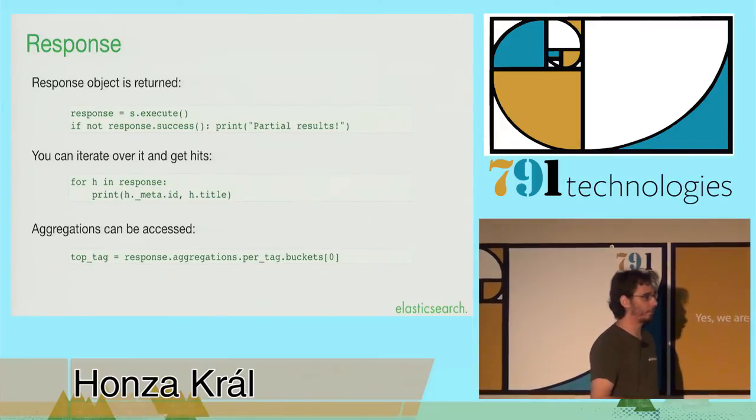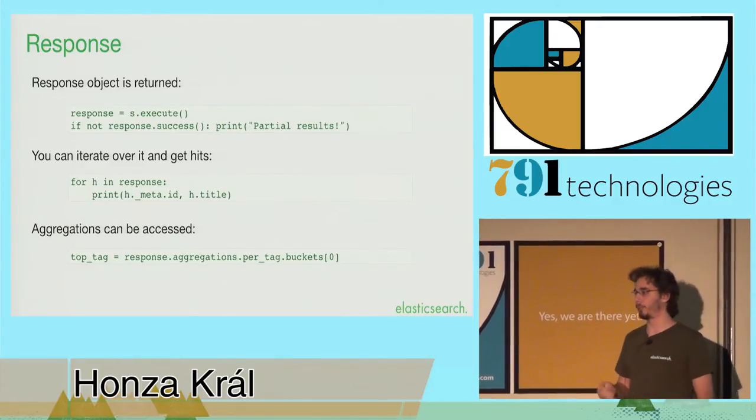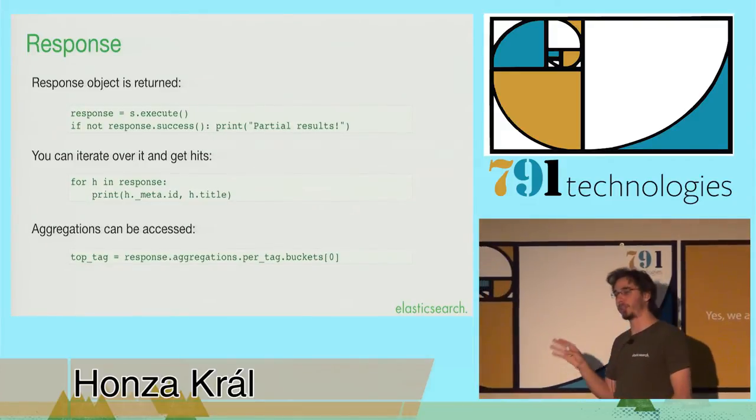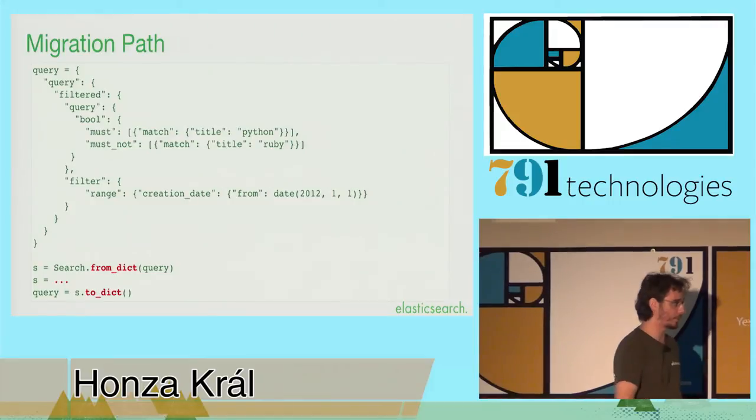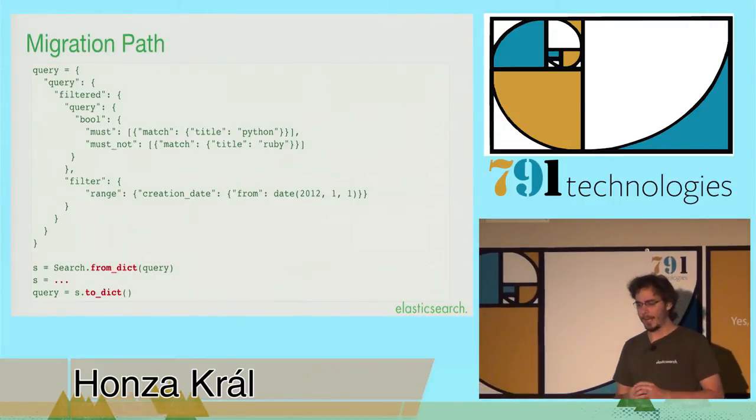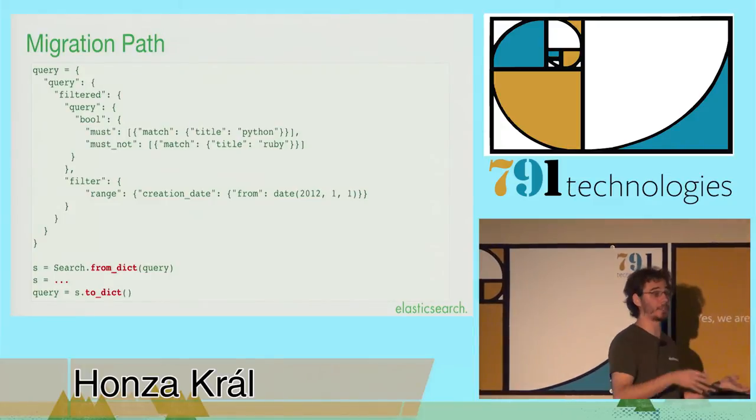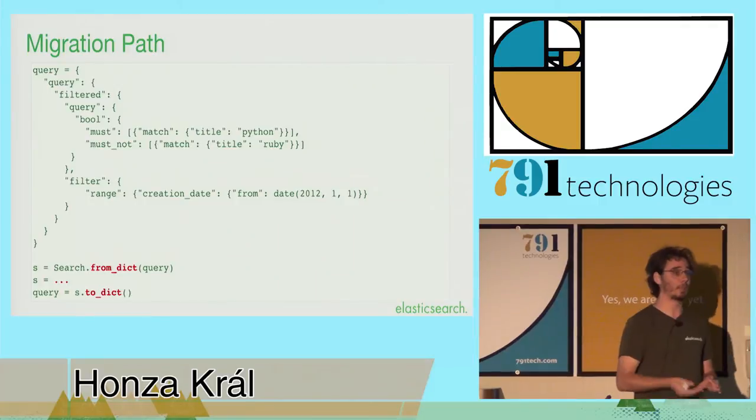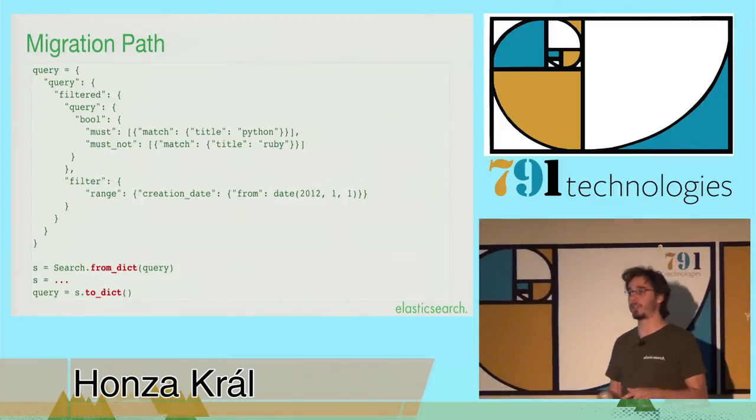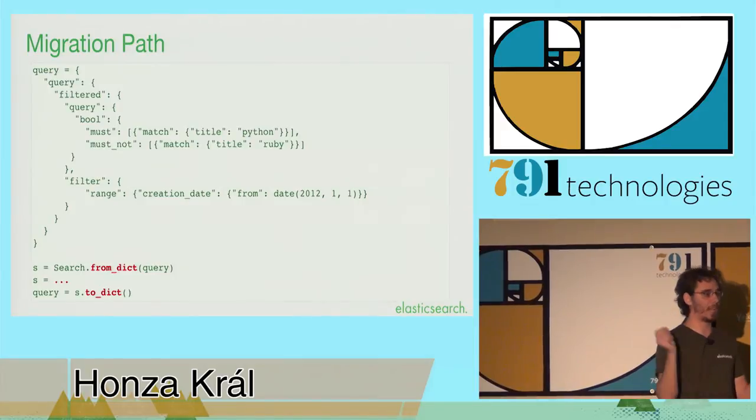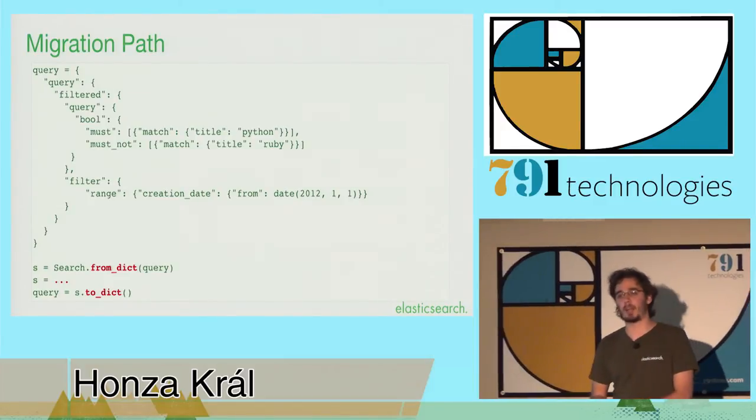So, this is essentially all that we have done. So, now, what do you do if you want to start using it? If you have a fresh project, congratulations, I envy you from all of my heart. If you don't, hopefully, you're already using the low-level client. In that case, you already have the dictionaries with your queries lying around. So, what you can actually do is you can just create a search object from the dictionary, manipulate it however you wish, and then either execute it directly, or you can, again, serialize it back to the dictionary and plug it back into your existing code. So, for example, if you have a query somewhere and you wished that it was simpler to add a filter to it, just create a search object from it, add a filter to it, serialize it again. And nobody needed to know that you actually cheated and used a different library instead of doing the work yourself.